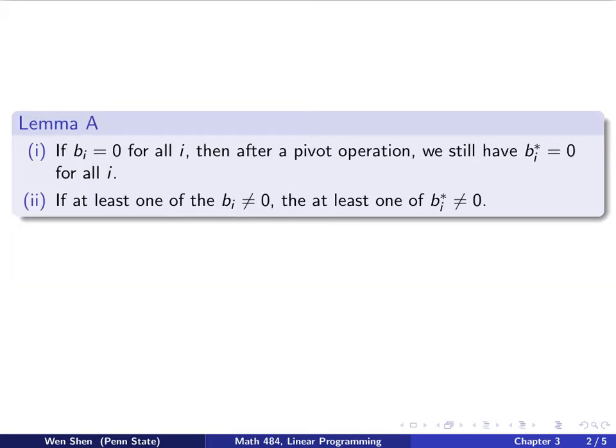Let's first introduce a technical lemma. I call it lemma A, so we can refer back to it. It includes two cases. First case, if the bi equals zero for all i, so for the constraint, the right-hand side, all of them are zero, then after a pivot operation, the new bi's on the right-hand side will still all be zero.